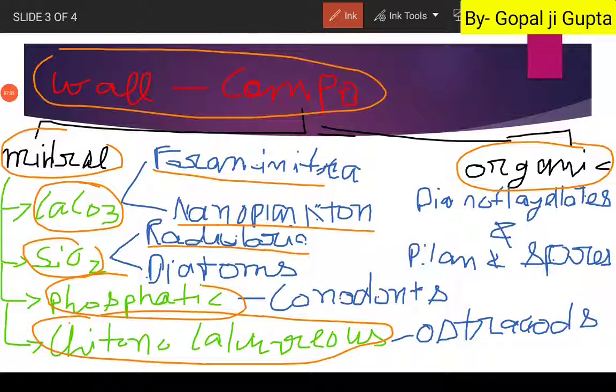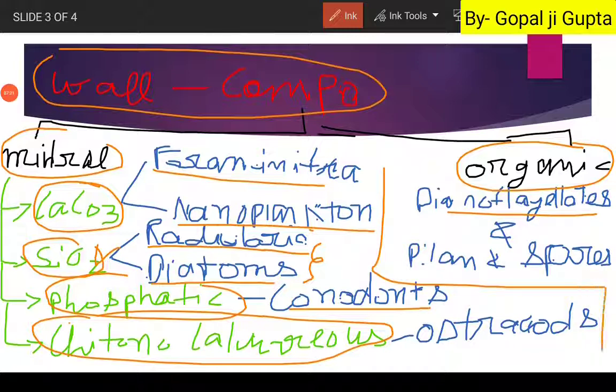In the calcareous wall we have the microfossils related to the Foraminifera and the nanoplanktons. We have the Radiolarians and Diatoms under the siliceous wall. Then we have Conodonts under the phosphatic wall, and under the chitinocalcareous we have Ostracodes. Then Dinoflagellates and pollen and spores both belong to the organic walled microfossils. So this is a general classification.